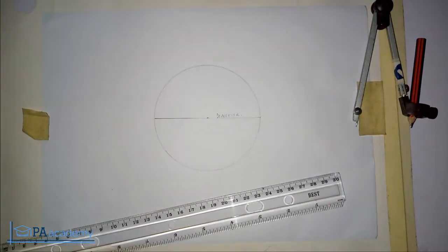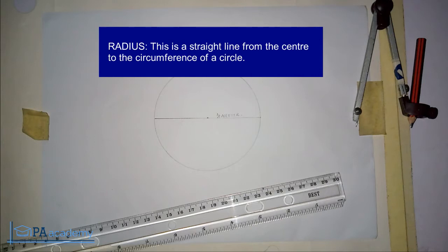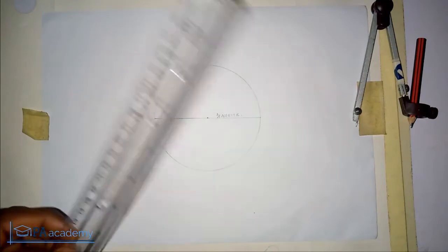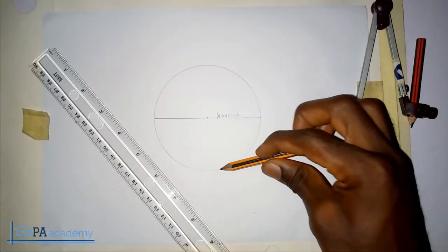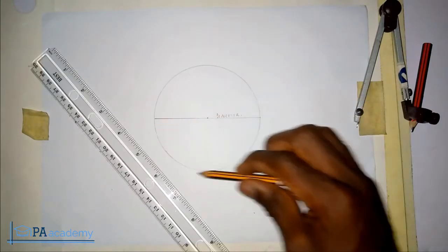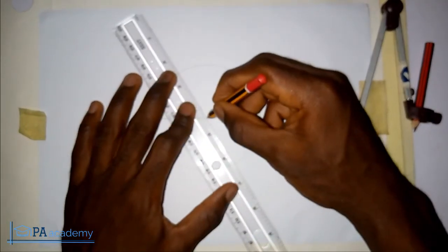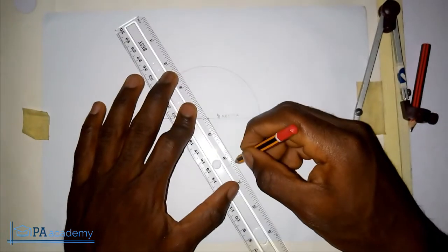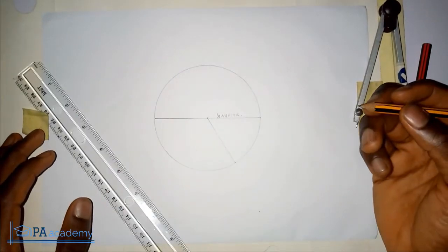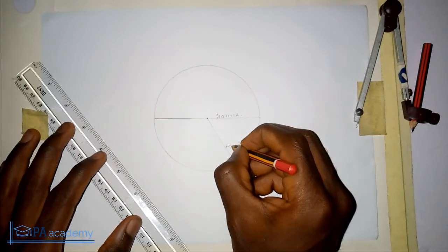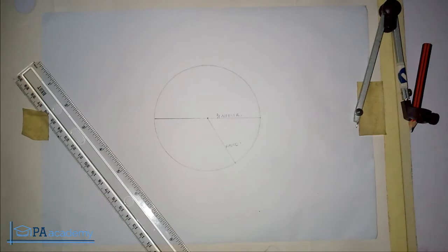Now let's look at radius. The radius is a straight line from the center to the circumference of the circle. It comes from the center to the circumference — don't forget the circumference is this circle we are seeing. Let me draw a radius: from the center to the circumference. This represents the radius.